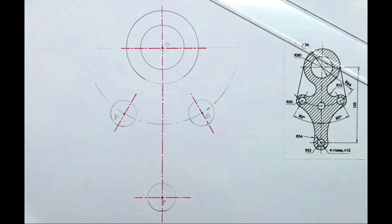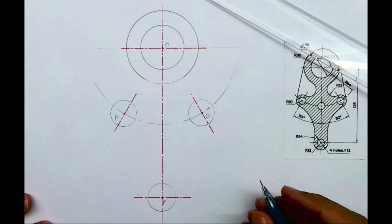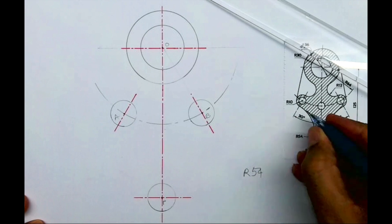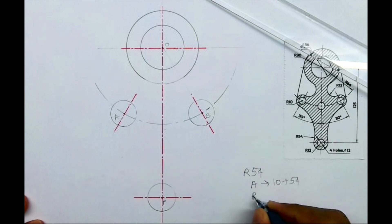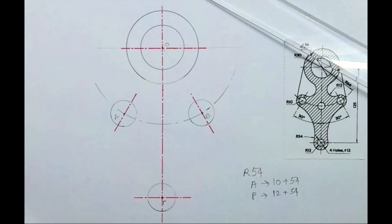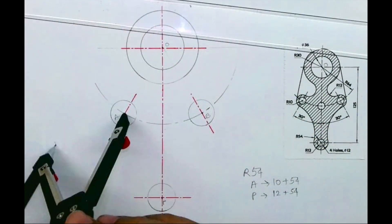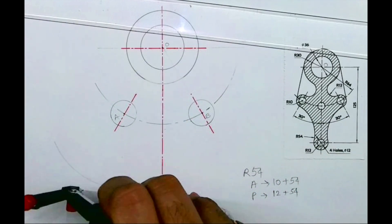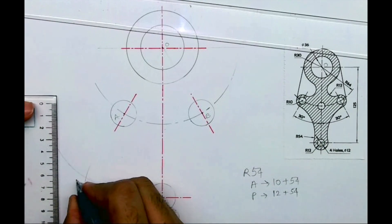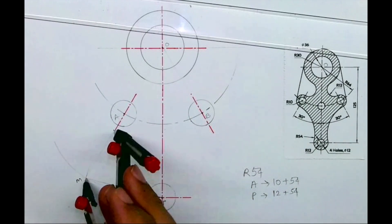Now we will think about how to draw radius 54. There are two radii — 54 and 12. So first we will draw radius 54. To draw radius 54, from A we need to cut 10 plus 54, and from B we need to cut 12 plus 54. Because it is external, we need to add. This has to be done on both sides. From A you cut 64 and from P you cut 66, and wherever they intersect — let's call that point M — from M you can take radius 54 and draw an arc.